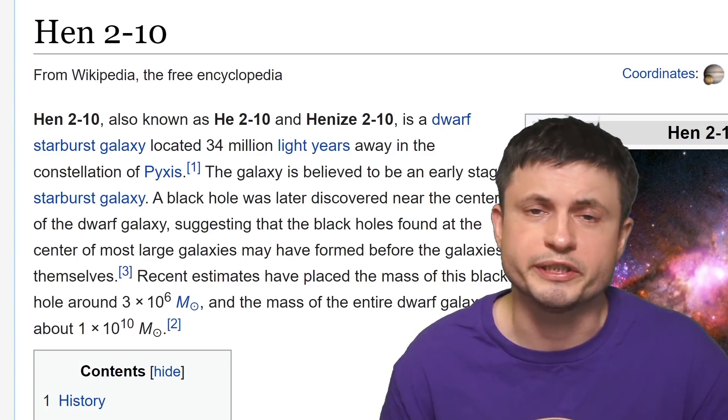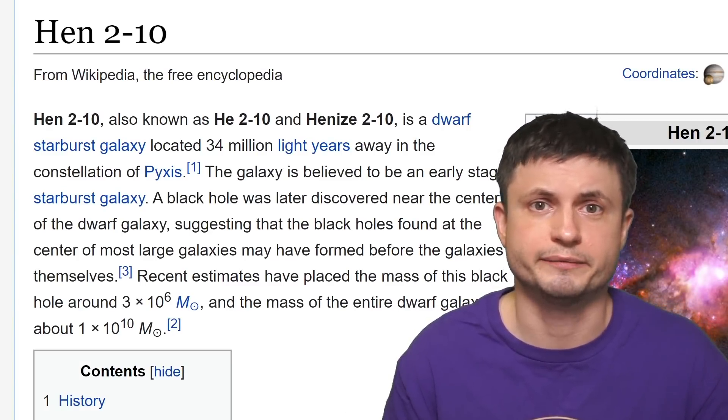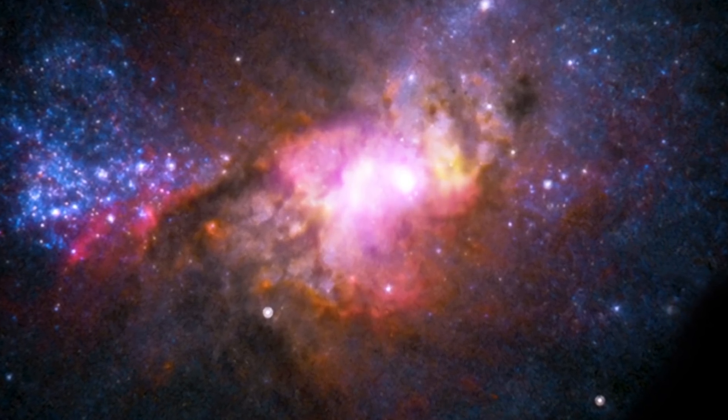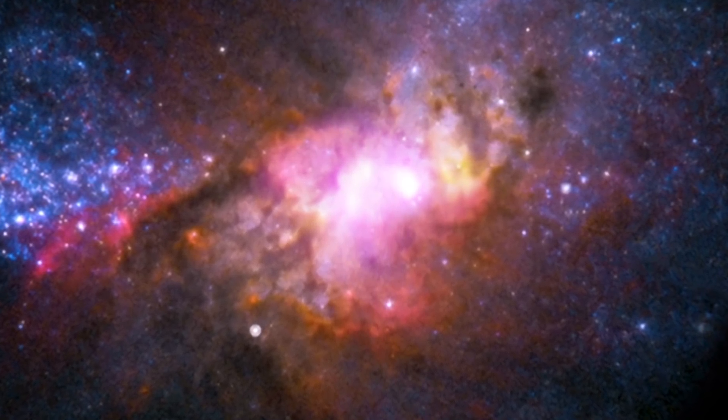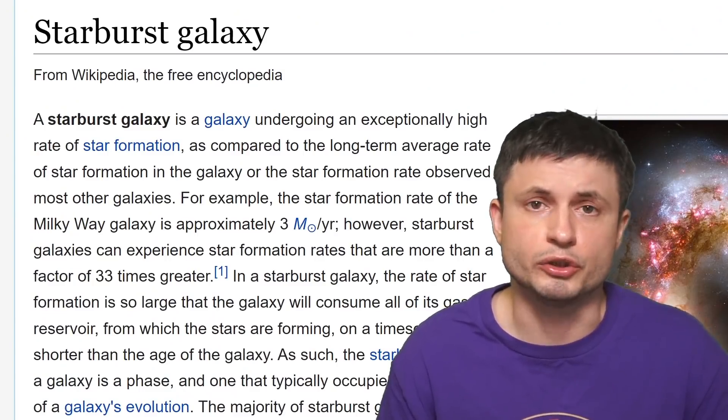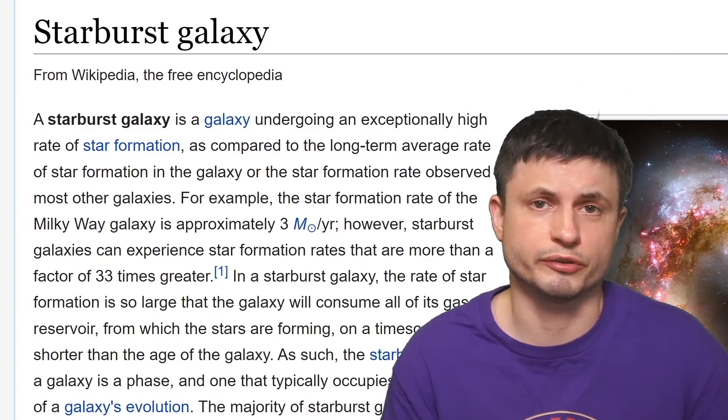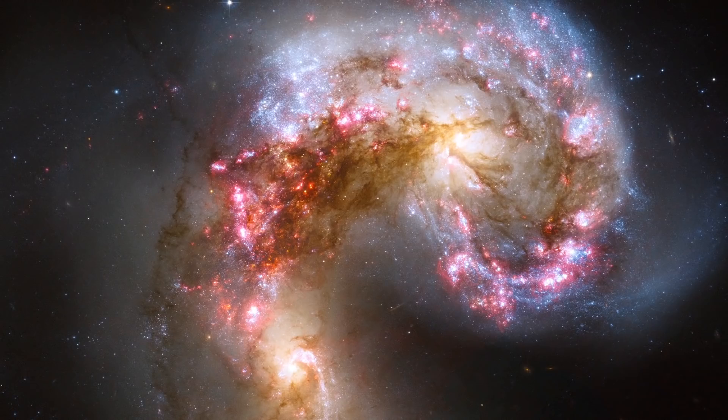First of all where exactly is this located? This is in a dwarf galaxy known as Henize 2-10. The dwarf galaxy that sort of looks like this and as you can probably see from this image possesses some extremely bright features here and there and that's because this is what's usually referred to as the starburst galaxy.